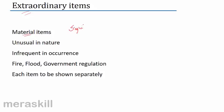Material items are significant items — significant or big enough to influence the decisions of the users of the financial statements. We have a materiality concept which says that if some item is very small and does not warrant following the rules or principles, then we may not do so, because it is not significant enough and will not affect any decision of the users of the financial statements. In such a case, some rules may be ignored.